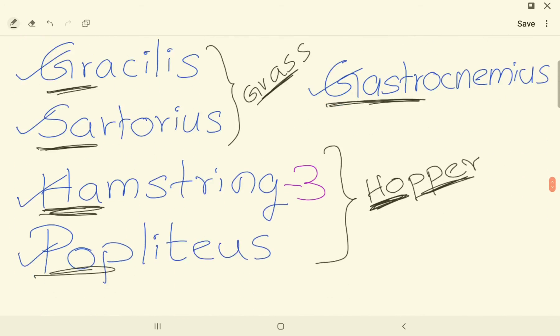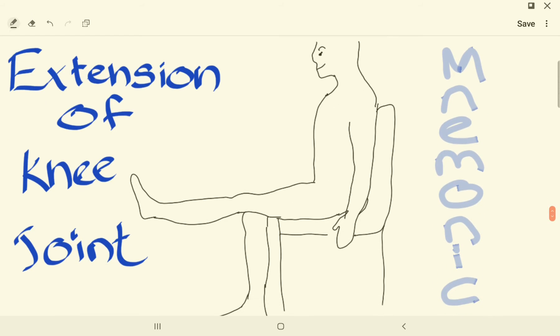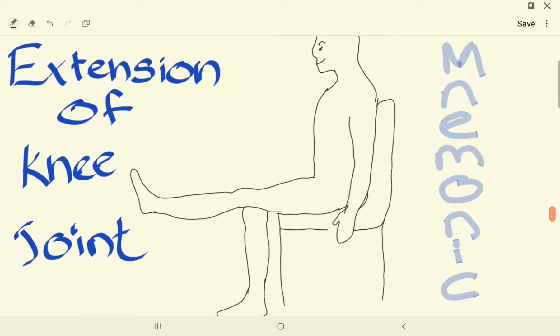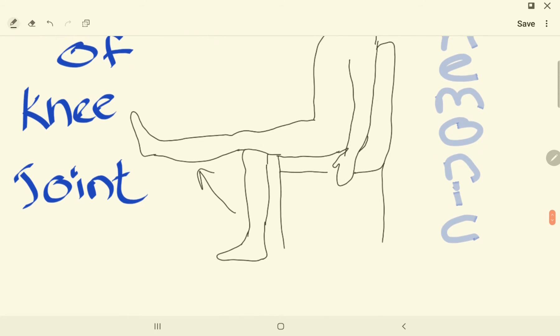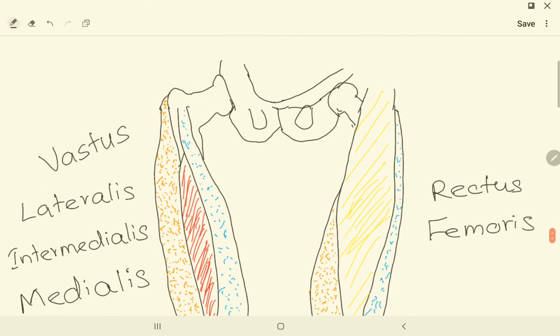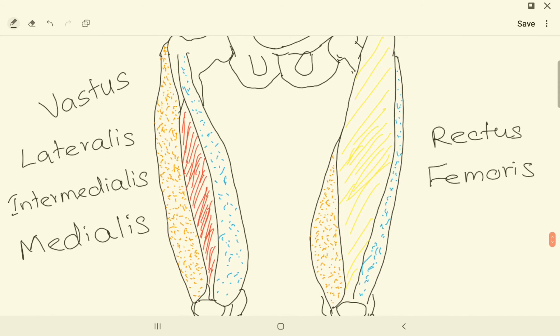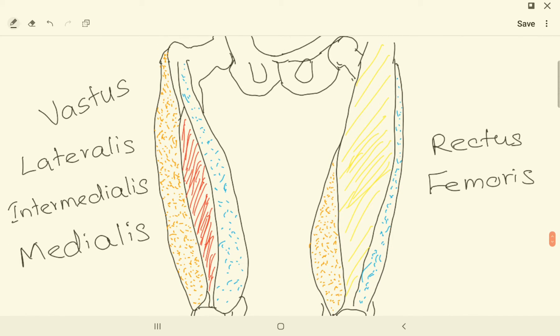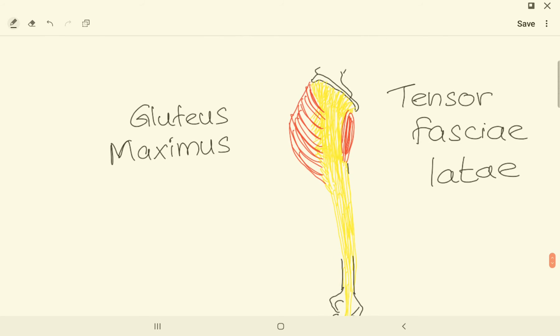Let's look at the extension of the knee joint. What are the muscles? We have quadriceps femoris muscles. They are vastus lateralis, intermedius, and medialis, and we have rectus femoris.